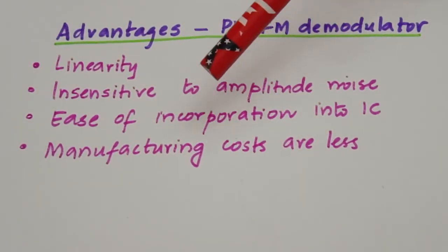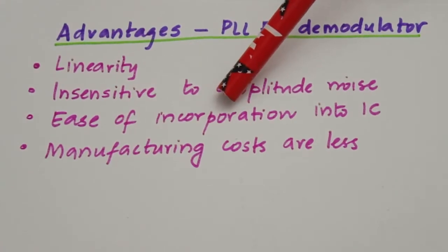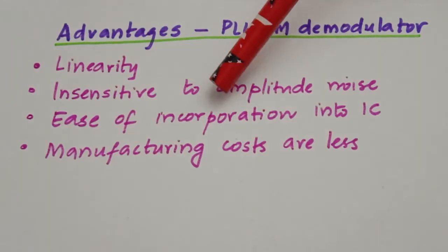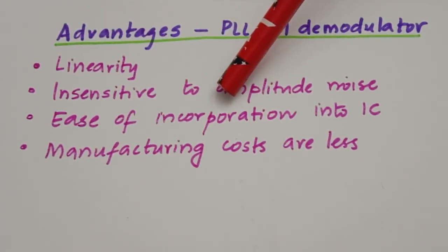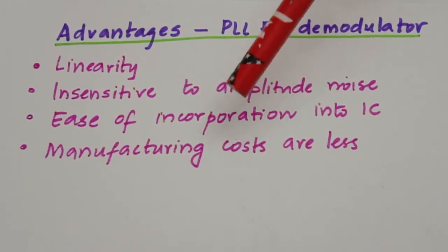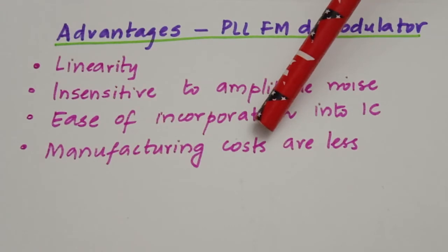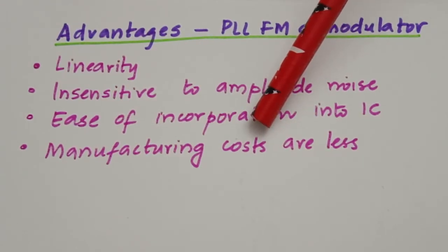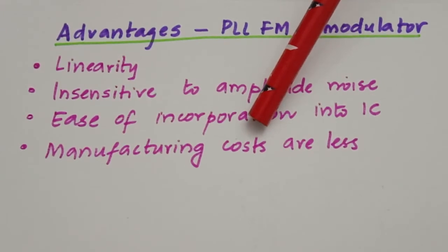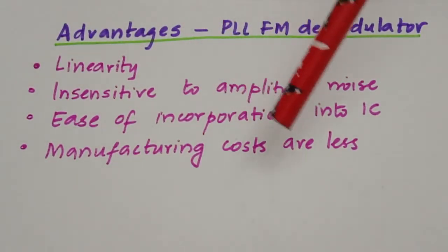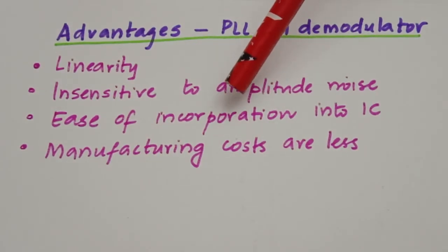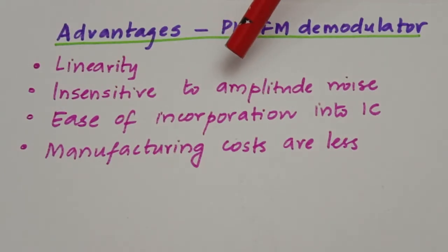A third advantage is the ease of incorporation into ICs. PLLs are very easy to implement in an integrated circuit and are available as ICs — one commonly used PLL IC is the LM565. Additionally, manufacturing costs are lower because only a few external components are required to complete the FM demodulator; there is no need for inductors or RF transformers as required by other demodulator circuits. These advantages make the PLL FM demodulator widely preferred.